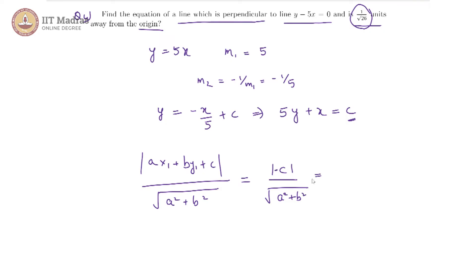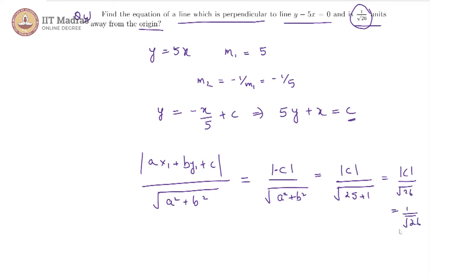The modulus of minus c is the same as modulus of c, and root of A squared plus B squared in our case is root of 25 plus 1, which is root 26. So we have |c| by root 26. This is given to be 1 by root 26, which implies |c| equals 1, and therefore c could be plus or minus 1.